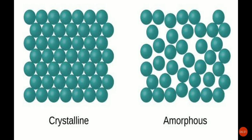Here we can see the arrangement of particles in crystalline as well as amorphous solids. In crystalline solids, the particles are very closely and tightly arranged, with minimal vacant space, and they have a definite arrangement as seen in the picture. In amorphous solids, they do not have a regular arrangement and the particles are loosely arranged compared to crystalline solids.